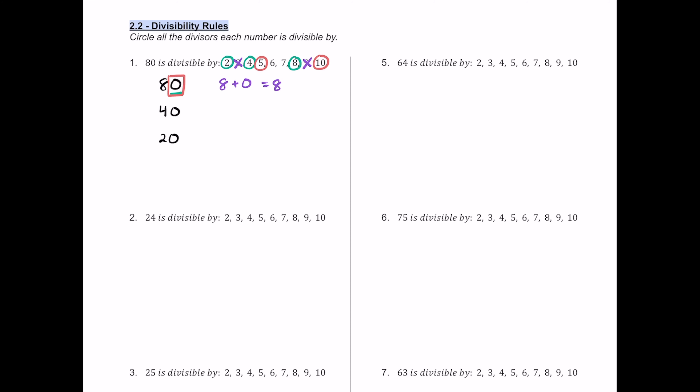For 6, the number must be divisible by both 2 and 3. Since 3 didn't work, 6 will not work. For 7, the recommendation is to just do the long division. 80 divided by 7 gives 11 with a remainder of 3, so 80 is not divisible by 7.